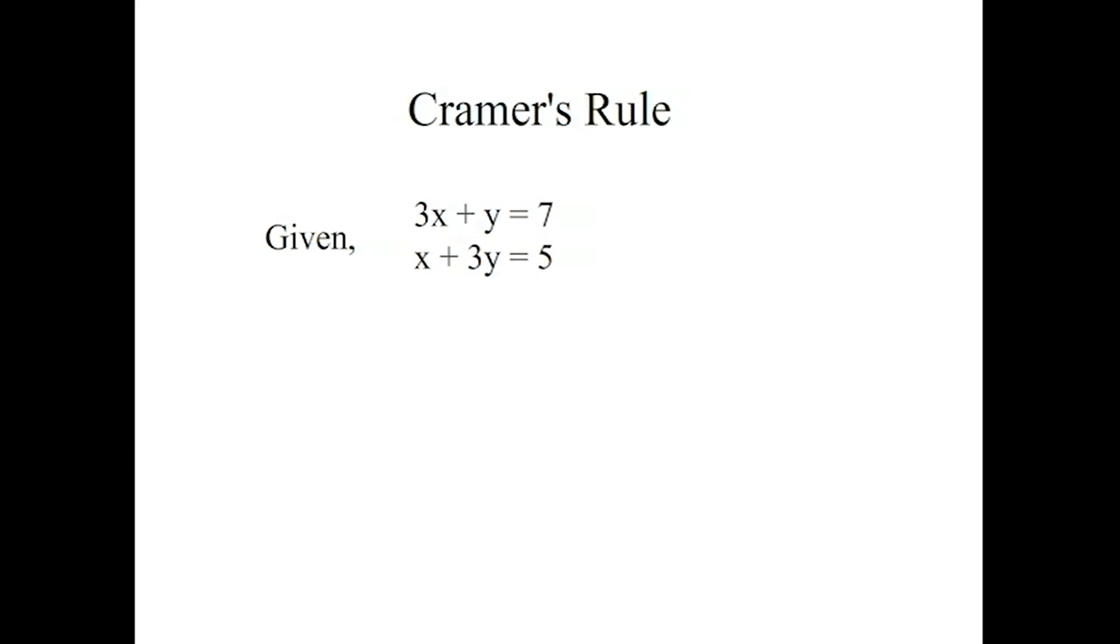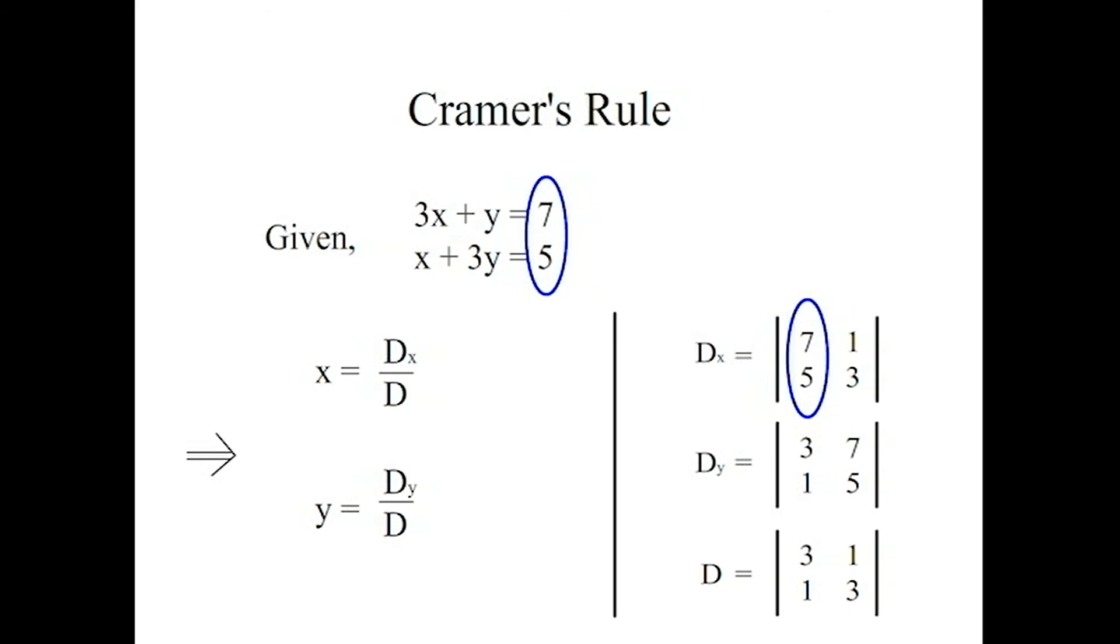Then, according to Cramer's rule, for the given set of equations, the solution is x equals dx by d, and y equals dy by d. Where d is the determinant of transformation matrix, dx is d with the first column replaced by 7,5, and dy is d with the second column replaced by 7,5.